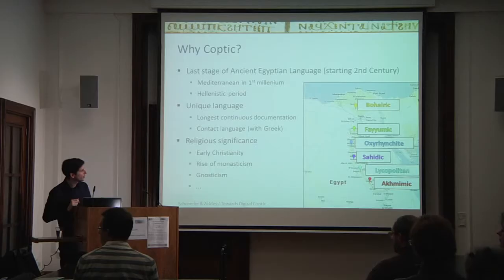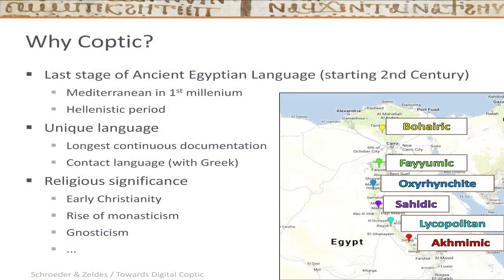As you can see in the map, there are several dialects of Coptic. Our work focuses on Sahidic Coptic — the language of the most classical resources and one of the earlier Coptic dialects. The language of the present-day Coptic church is the Bohairic dialect. We are currently only working on Sahidic, but expanding to other dialects is a possible direction for the future.